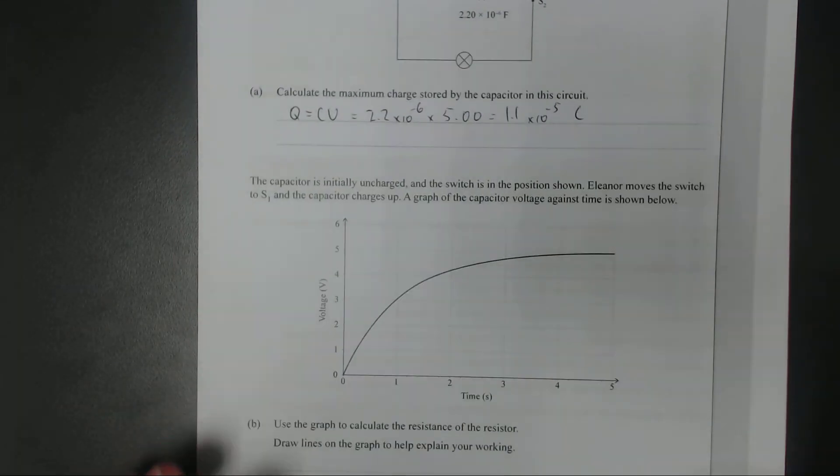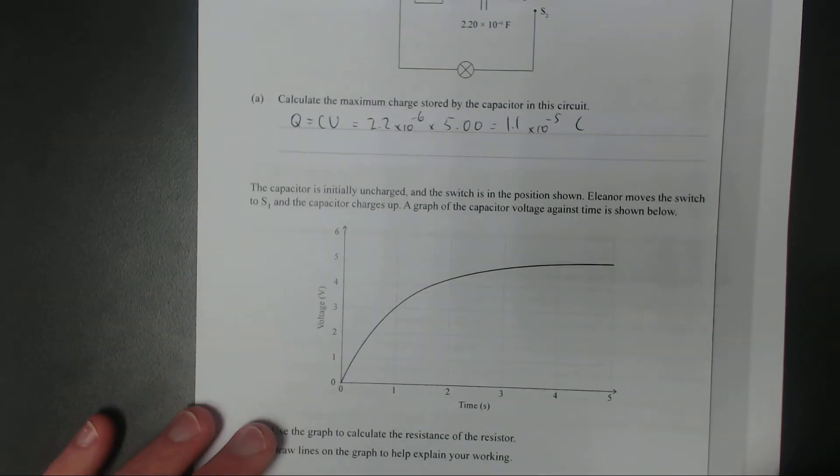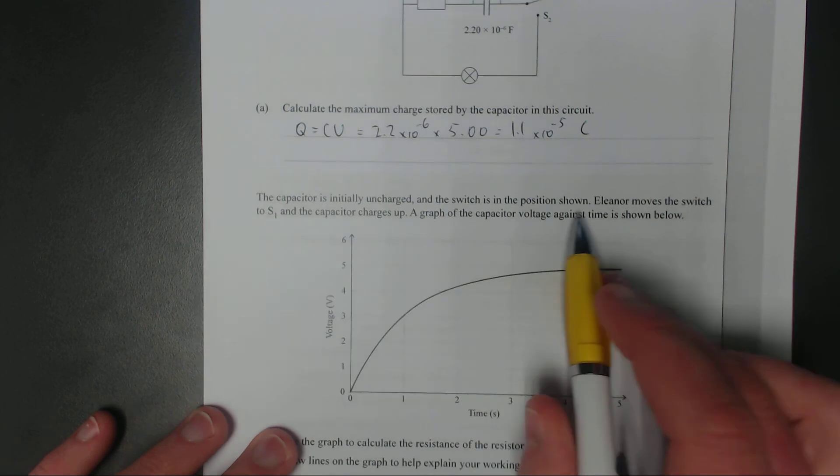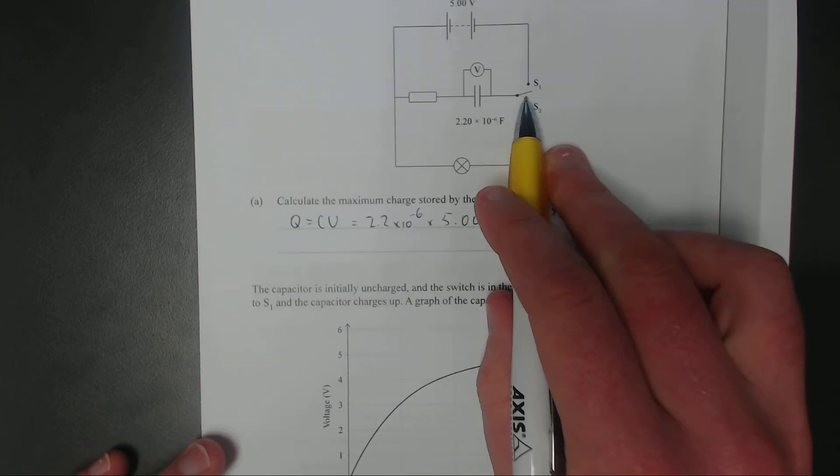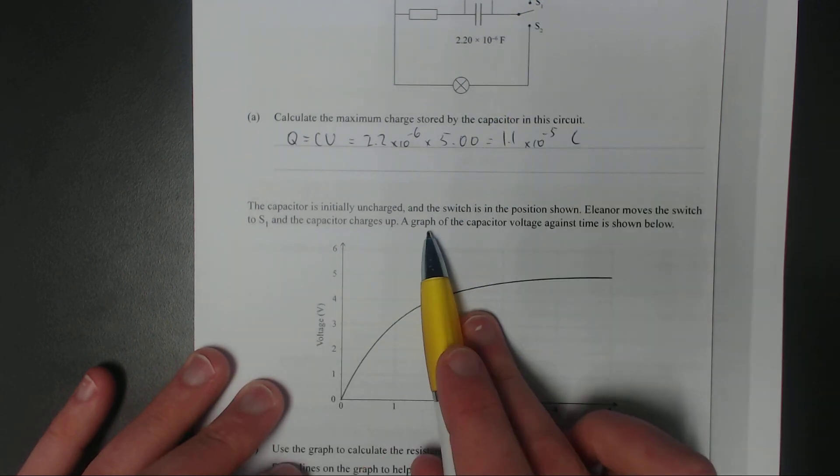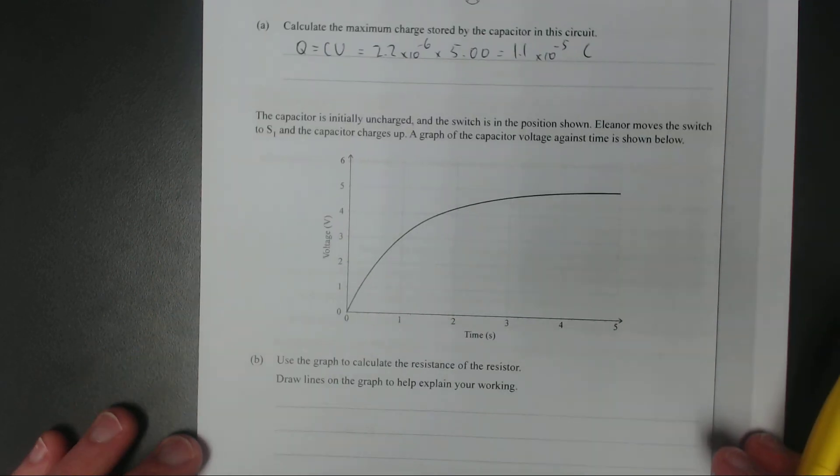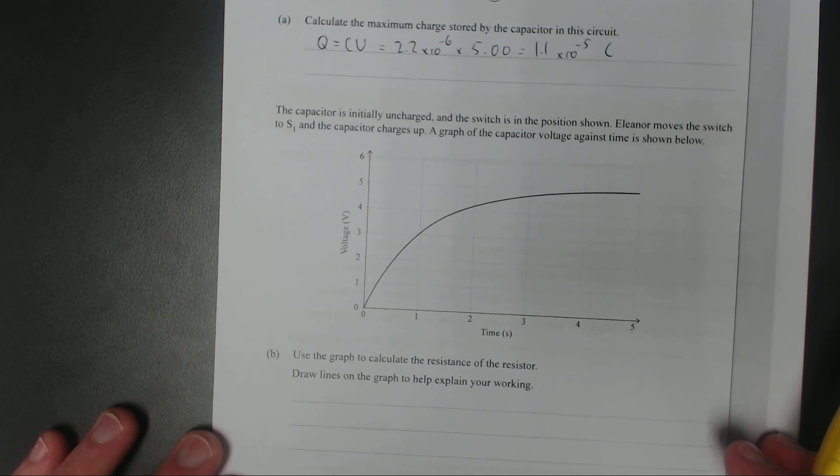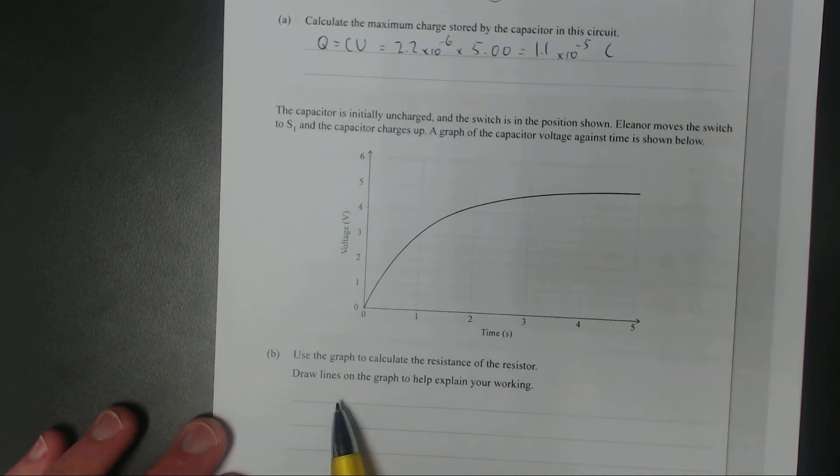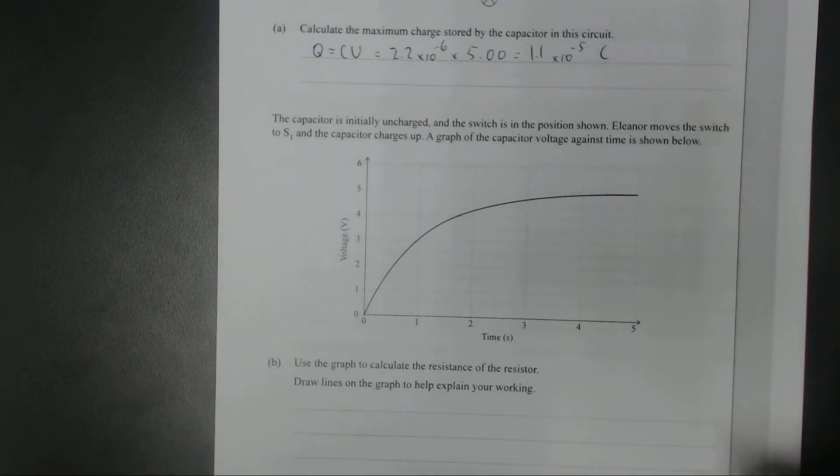Second question. The capacitor is initially uncharged and the switch is in the position shown. So originally the capacitor is not charged. Eleanor moves the switch to S1, charging the capacitor up. A graph of the capacitor voltage against time is shown below. Use the graph to calculate the resistance of the resistor. Draw lines on the graph to help explain your working. You can if you want, but there's another sort of cheat method you could do. I'm going to do both methods.